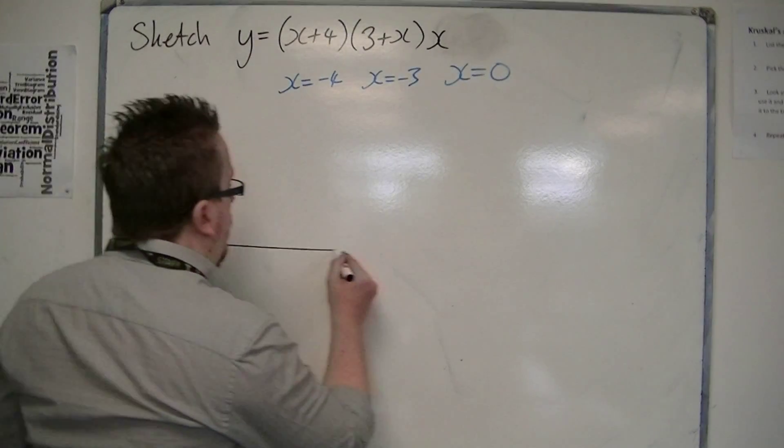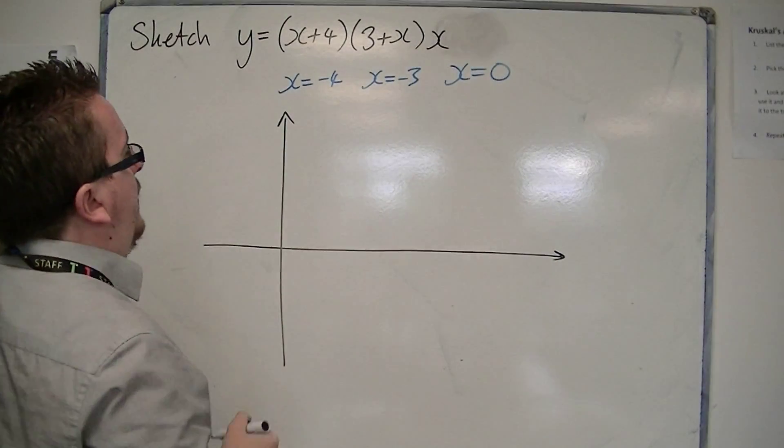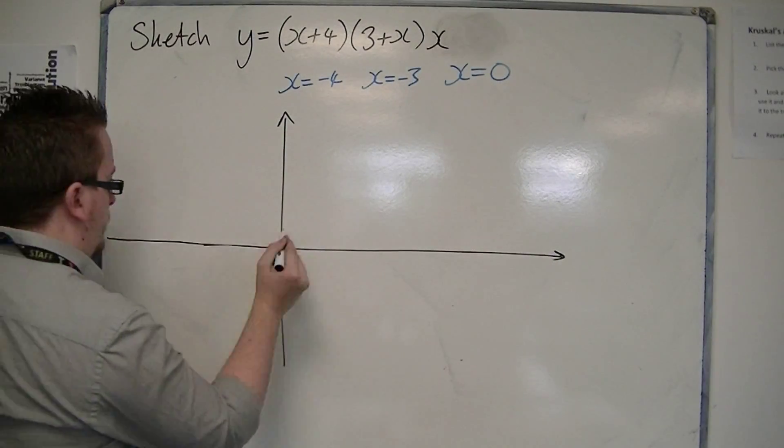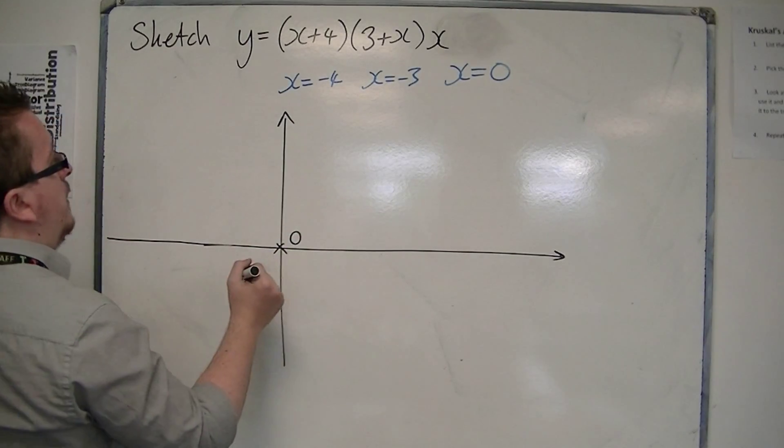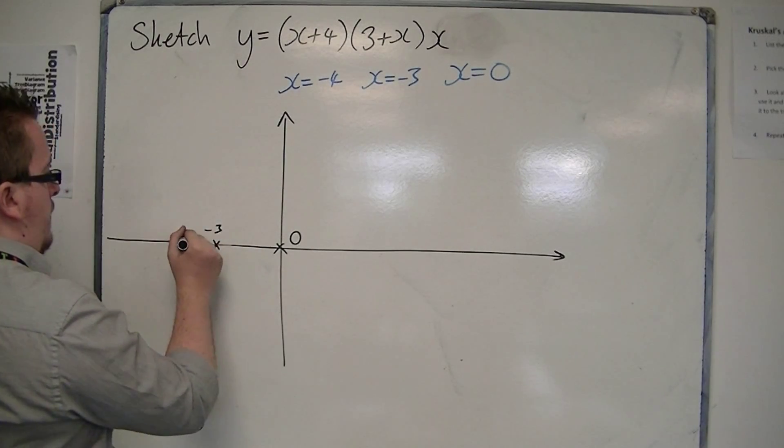So that means that is where the cubic crosses the x-axis. So it's crossing at 0, minus 3, and minus 4.